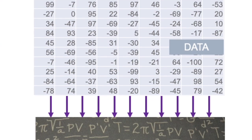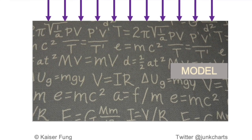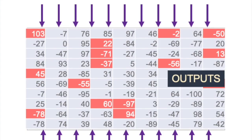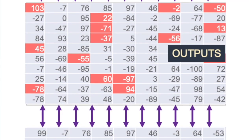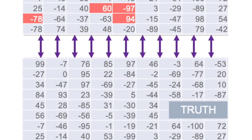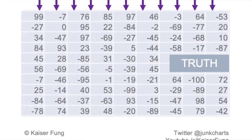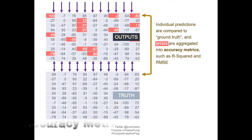In statistics, data mining, and machine learning, we fit models — we find historical data and look for mathematical formulas that allow us to reproduce that data. In the real world we'll never perfectly replicate historical data, but we want to come as close as possible. We have metrics such as R-squared and RMSE that measure how close we get.